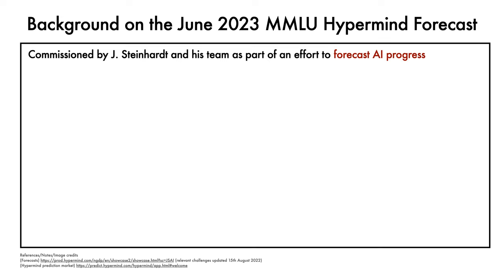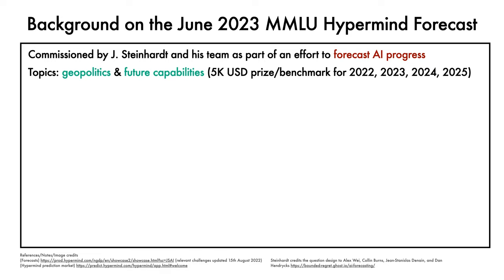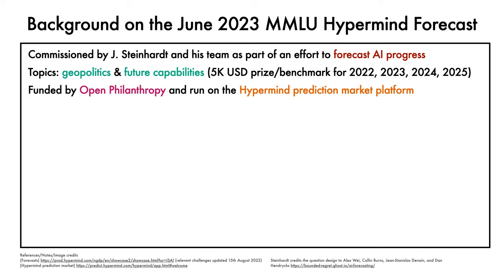We'll look specifically at the June 2023 HyperMind forecast as an example. This was commissioned by Jacob Steinhardt and his team as part of an effort to get a better handle on reasonable timelines for AI progress. This question was one of six spanning the topics of geopolitics and future AI capabilities. There was a US$5,000 prize per benchmark, which comprised four questions requesting forecasts for the state-of-the-art at specific dates in 2022, 2023, 2024, and 2025. The competition was funded by Open Philanthropy and hosted on the HyperMind prediction market platform.